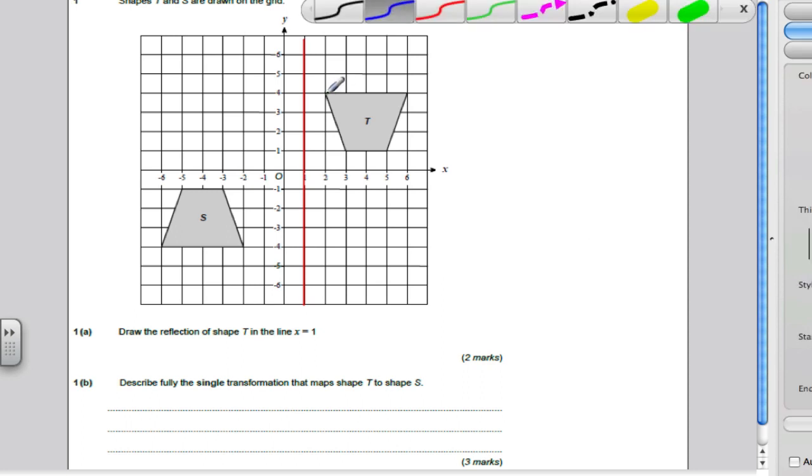The way I do it, I count each corner from the mirror line, the perpendicular distance. That's 1 square. This one will be 1 square this side. This is 1, 2 squares. This will be 1, 2 squares that side. This one is 1, 2, 3, 4, 5 squares from the mirror. And this one is 1, 2, 3, 4 from the mirror. And I would just draw in my shape there. Nice and easy for two marks there.